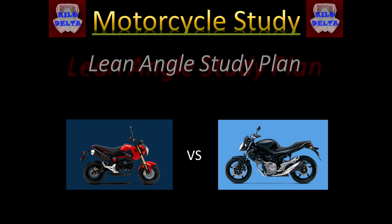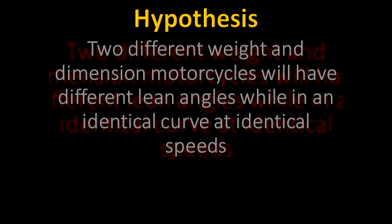I've heard that lean angle is a combination of speed, rider lean, curve geometry, and bike size. I plan to test the bike size assertion. My hypothesis is simply that two different sized bikes will have different lean angles in a turn.